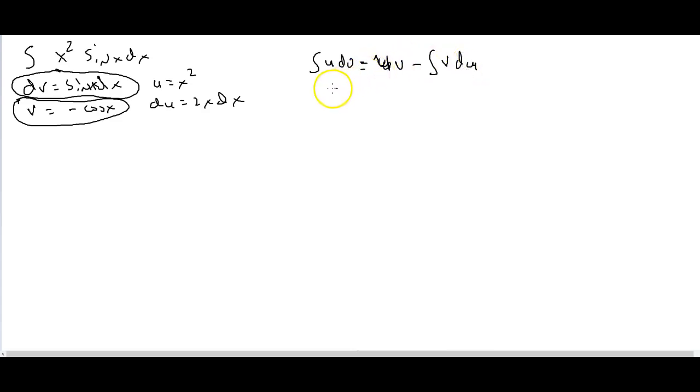So then I start plugging things in thinking hey this is working out great. I plug in my u, my u is equal to x squared, that looks good. dv is equal to sine x dx, and that looks like what I want to integrate. Then I've got uv, so u is x squared, and I put my v with my minus sign in front: negative cosine x. Everything's working beautifully.